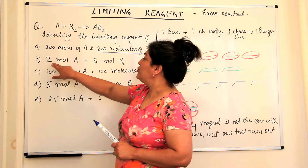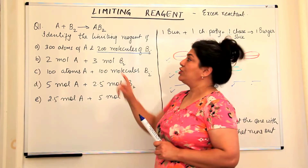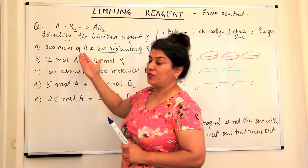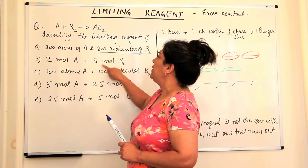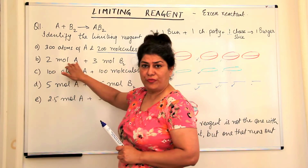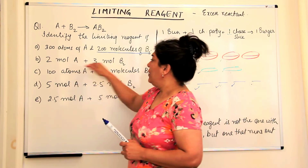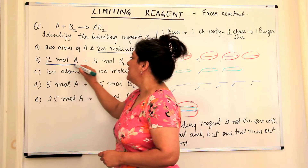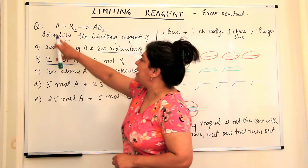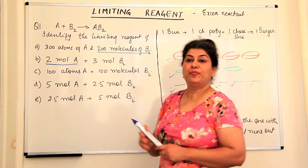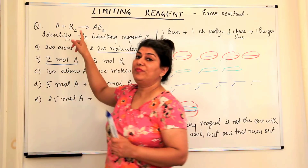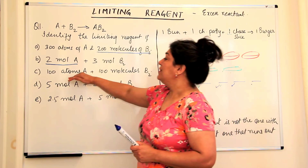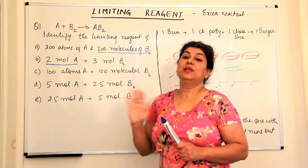In the second situation, you have 2 moles of A reacting with 3 moles of B₂. Remember, a balanced chemical equation is a molar equation. If you have 2 moles of A, you only need 2 moles of B₂. Since you have 3 moles of B₂, B₂ would be the excess reactant and A would be the limiting reagent. Third case: 100 atoms of A and 100 molecules of B₂. Since the ratio is 1:1 and the numbers are equal, this equation is balanced and there would be no limiting reagent.